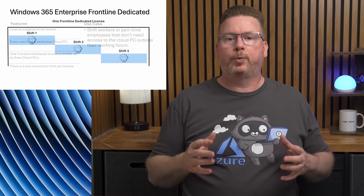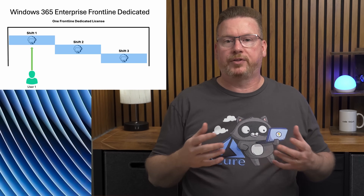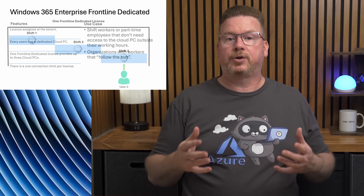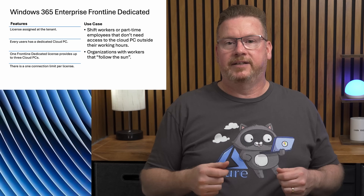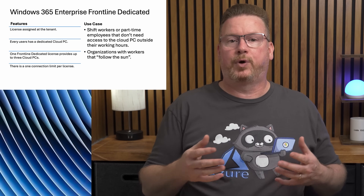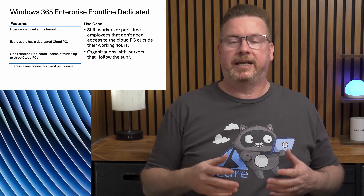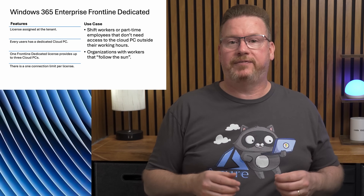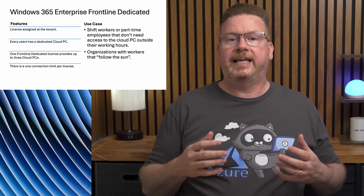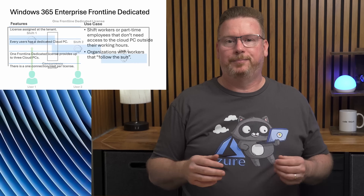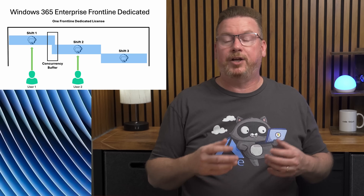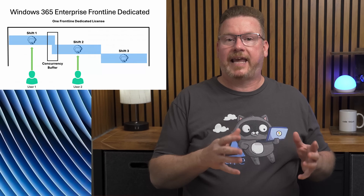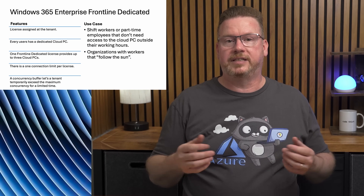Here's the catch: for each license, only one of the three computers can be logged into at a time. So if we have 100 licenses, we could have 300 cloud PCs, but only 100 can be accessed simultaneously. The use case is shift workers — think of a call center or nurse's station where people use a computer over three eight-hour shifts, or an organization following the sun across different geographies. It wouldn't make sense to pay for a computer for each user if only one shift is working at a given time. There's also a concurrency buffer to handle overlap between shifts.